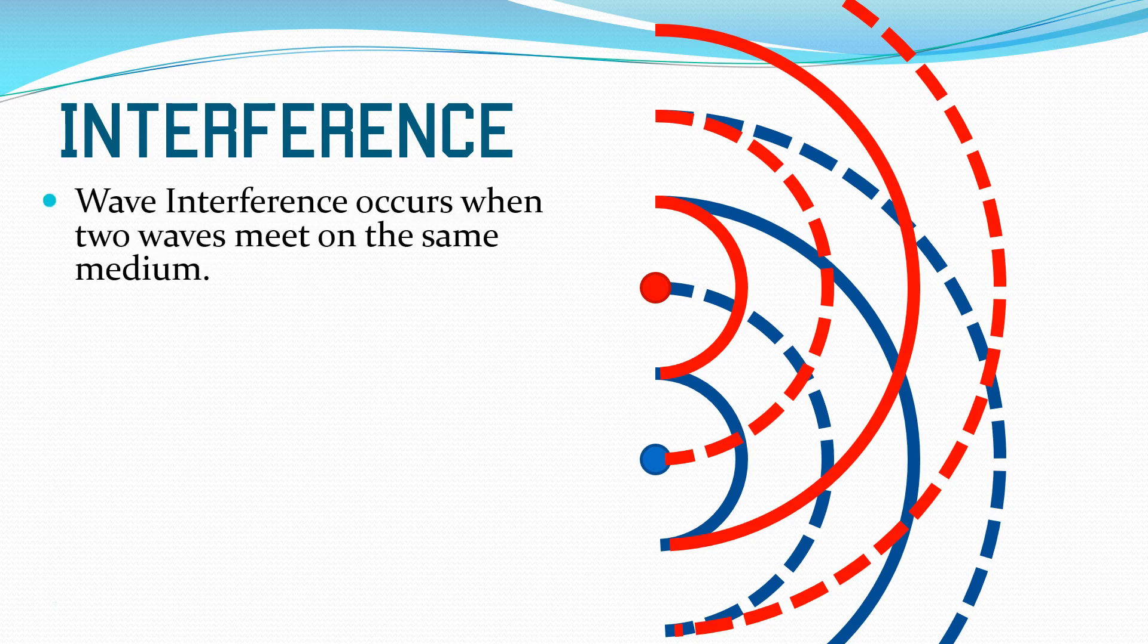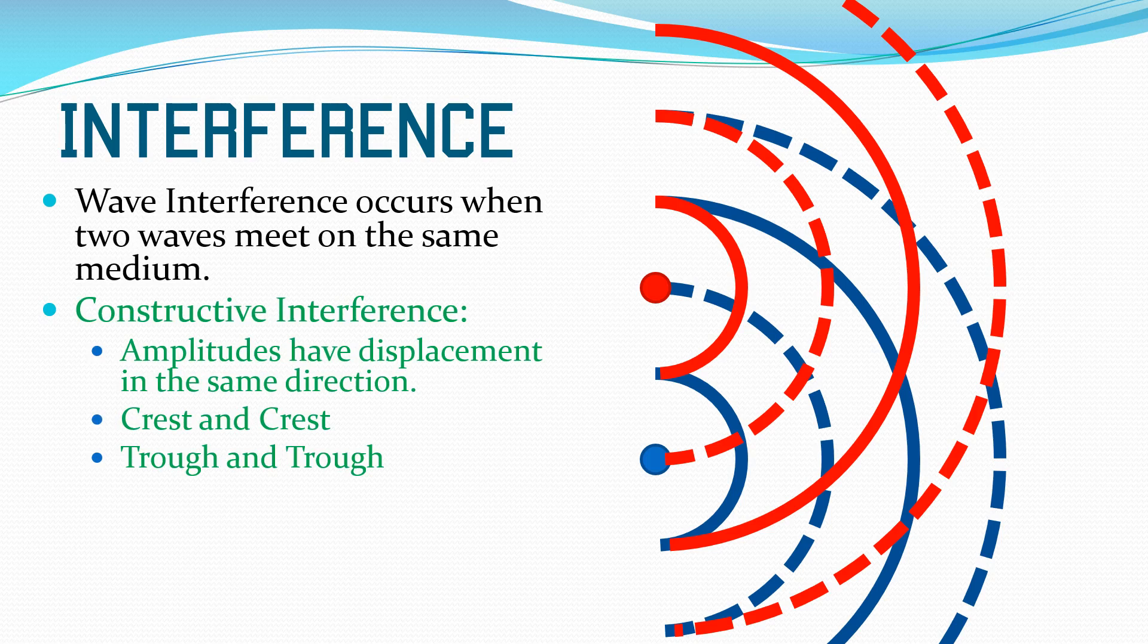When waves meet, they interfere. Wave interference occurs when two waves meet on the same medium. Constructive interference: the amplitudes have displacement in the same direction, so we add them up. This is when a crest and a crest meet, a trough and a trough meet. Those are points like that.